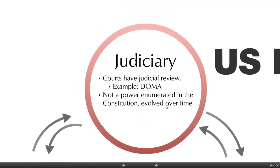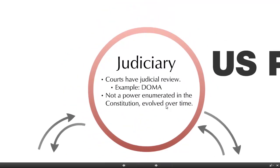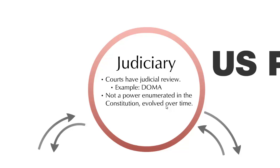First of all, the judiciary. The United States Supreme Court is really important for the political system. The court has judicial review — it can strike down federal law and state law alike, acting as a protector of the Constitution and constitutional rights.